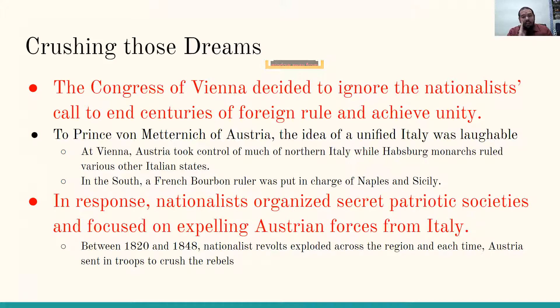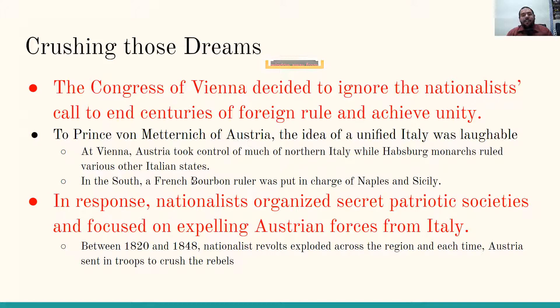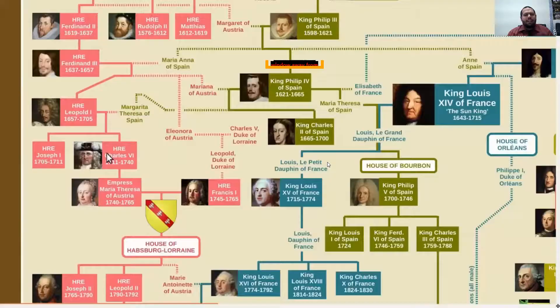Crushing those dreams. The Congress of Vienna decided to ignore the nationalists' call to end centuries of foreign rule and achieve unity. To Prince von Metternich of Austria, the idea of a unified Italy was laughable. At Vienna, Austria took control of much of northern Italy, while Habsburg monarchs ruled various other Italian states. In the south, a French Bourbon ruler was put in charge of Naples and Sicily. In response, nationalists organized secret patriotic societies and focused on expelling Austrian forces from Italy. Between 1820 and 1848, nationalist revolts exploded across the region, and each time, Austria sent in troops to crush the rebels.